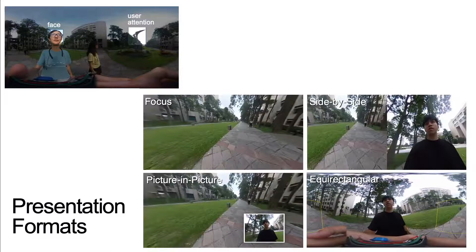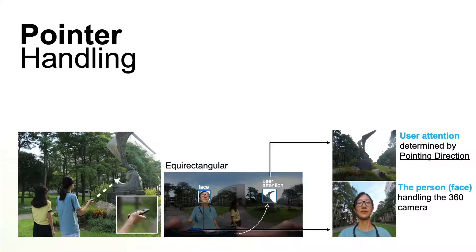This adds a layer of dynamics in presenting 360 media. The second handling technique is the pointer handling, which allows users to address user attention in the scene by just pointing at it with the camera body. Similarly, we can identify the user attention region according to the pointing directions, and together acquire the user attention image and the user face image.